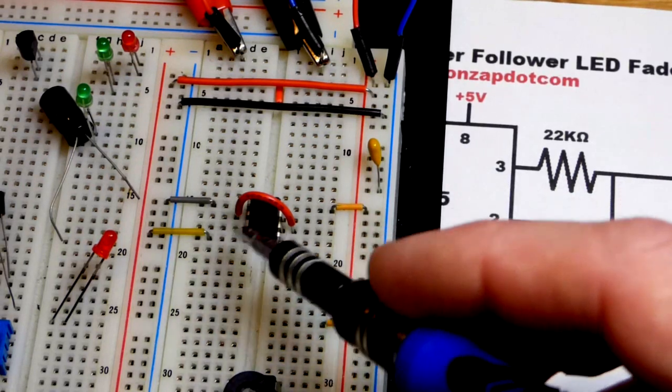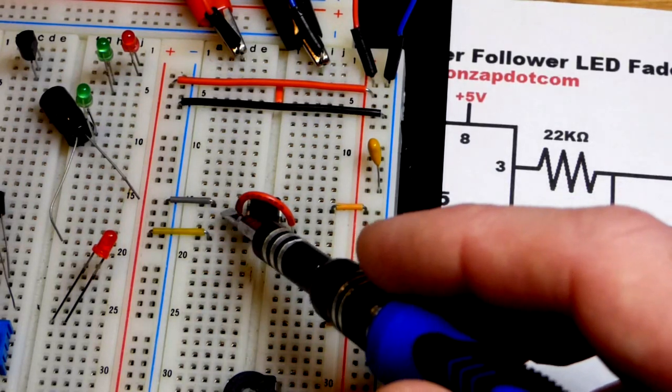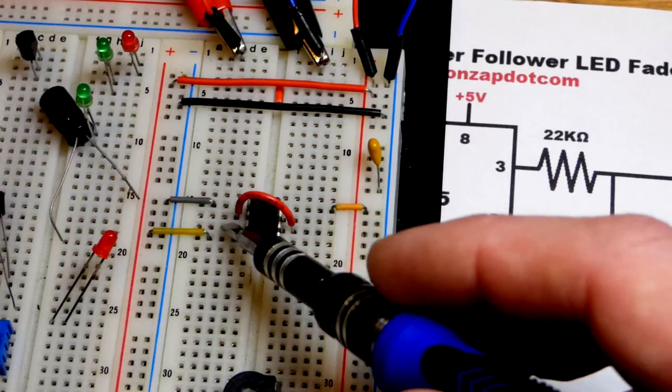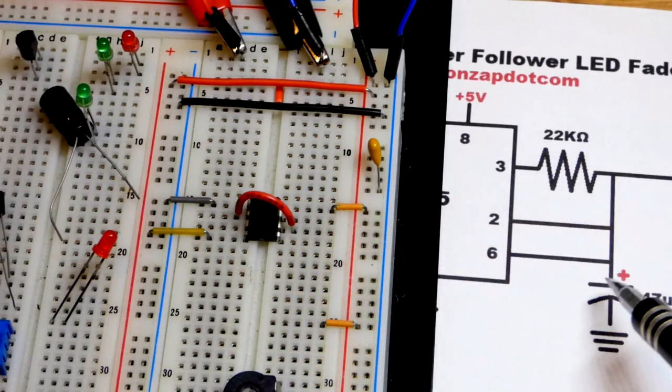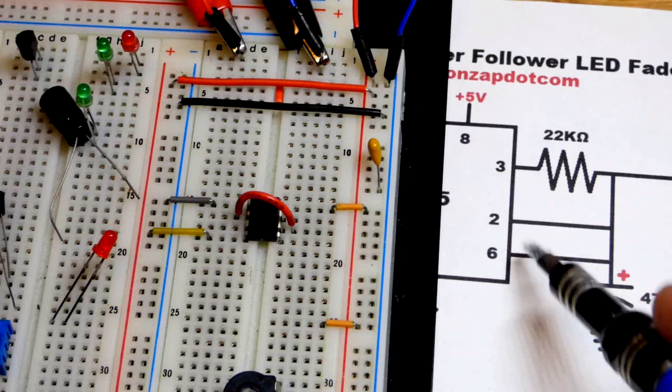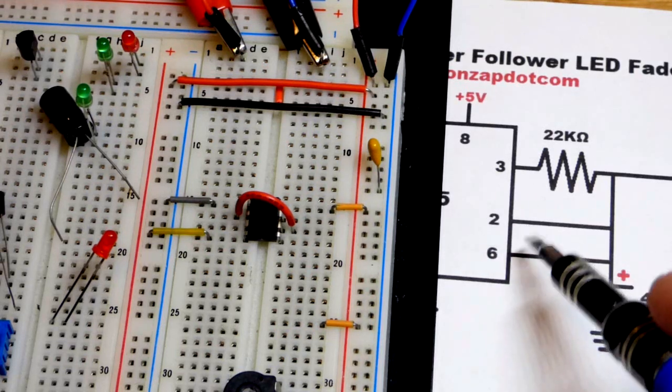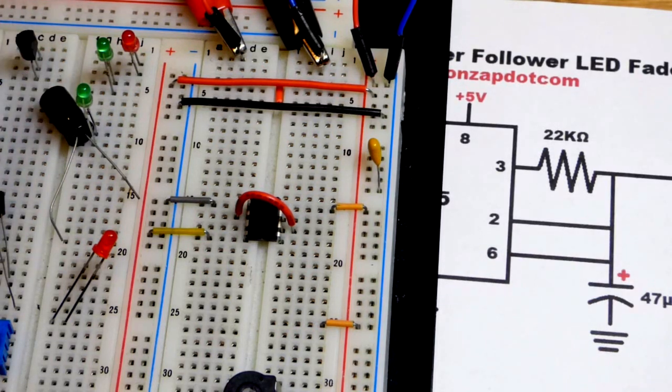The output is actually what's going to charge and discharge the capacitor for the most part. When the voltage gets down to one-third of voltage, that's when the trigger pin kicks in and sets the output high. That will charge the capacitor.